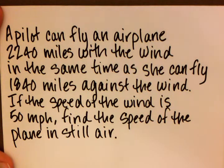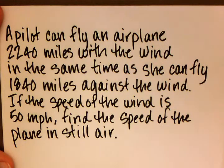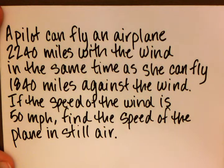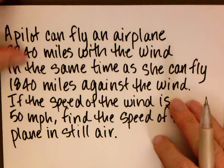A pilot can fly an airplane 2,240 miles with the wind in the same time as she can fly 1,840 miles against the wind. If the speed of the wind is 50 miles per hour, find the speed of the plane in still air.